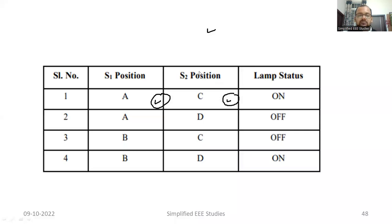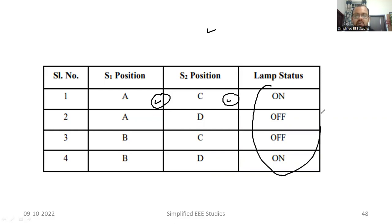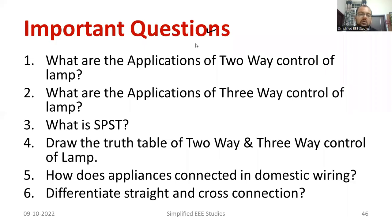We have one truth table. By operating the switches in different positions, you can control the lamps in this fashion. You can have a verification. Now I would like to discuss question number two. Let us have a brief discussion on question number two.